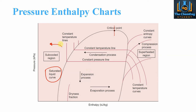For the pressure-enthalpy chart, we fix the temperature, so these lines are fixed at given temperatures. This is a simplified generic diagram — real diagrams will be shown shortly. Different temperatures are plotted at given enthalpy and pressure values, so if we know the temperature and enthalpy we can calculate the corresponding pressure, or if we know the pressure and temperature we can determine the corresponding enthalpy.